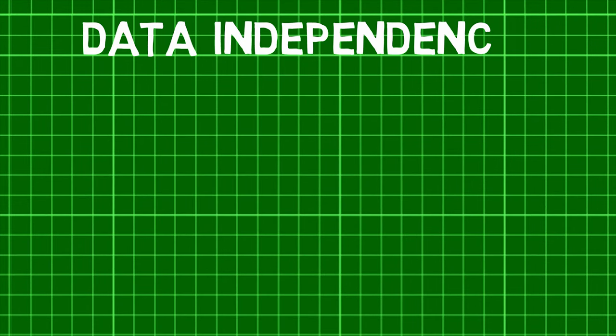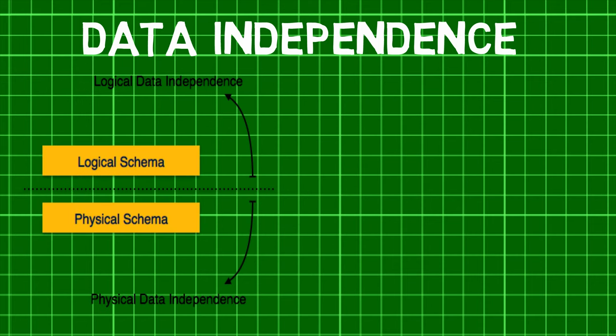Data Independence refers to the immunity of user applications to changes made in the definition and organization of data. It is essential because application programs should not be exposed to the details of data representation and storage. There are two types of Data Independence.